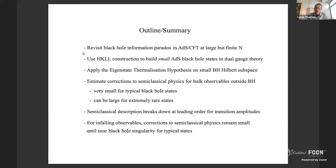Most of the work on black holes in holography is on large AdS black holes, which are these two-sided eternal black hole geometries that have an interpretation in terms of thermal states in the field theory. But for the information problem, you really want to think about black holes that are formed in collapse, are around for a while, and then evaporate. For that, you want to think about small black holes — black holes whose area is small compared to the AdS scale.